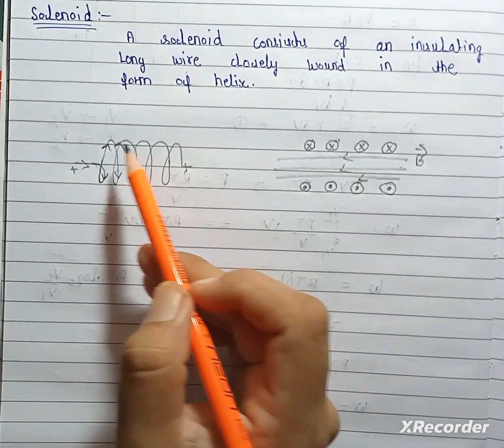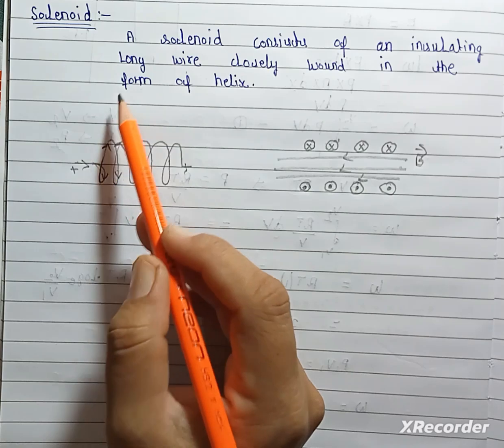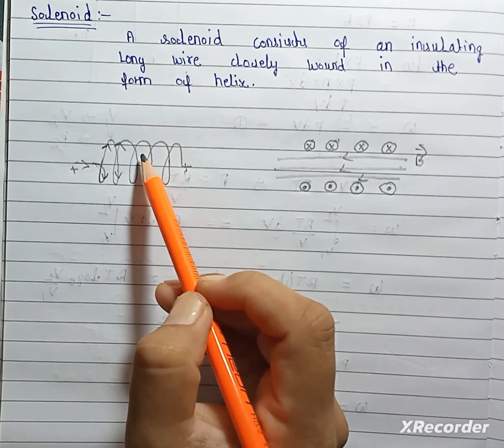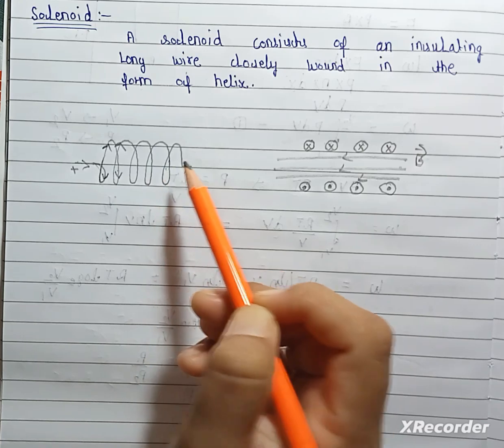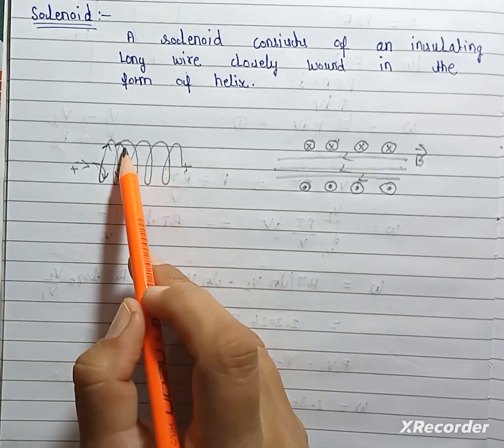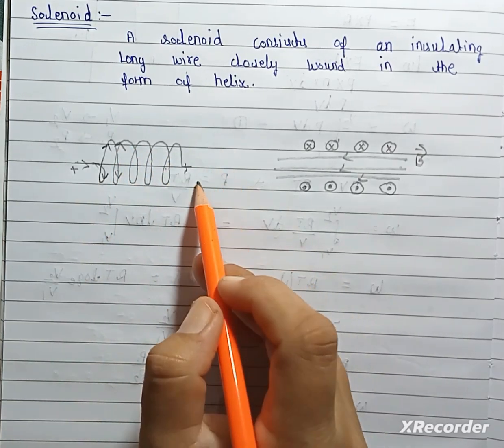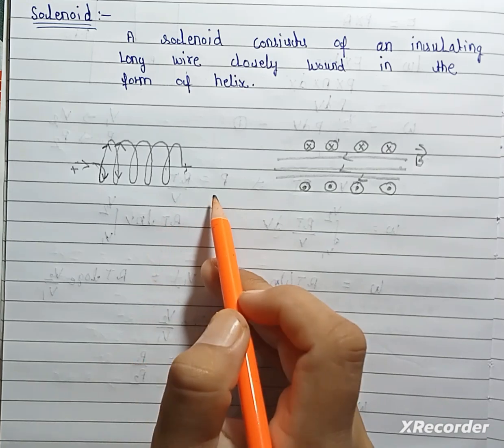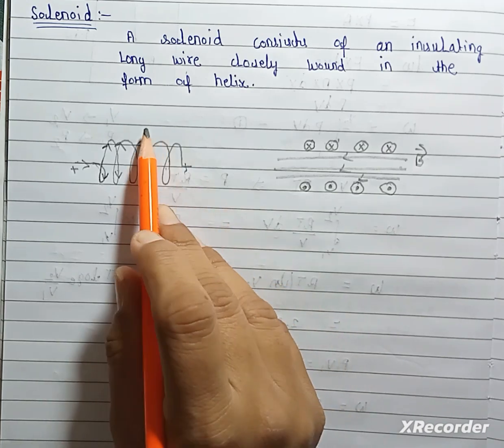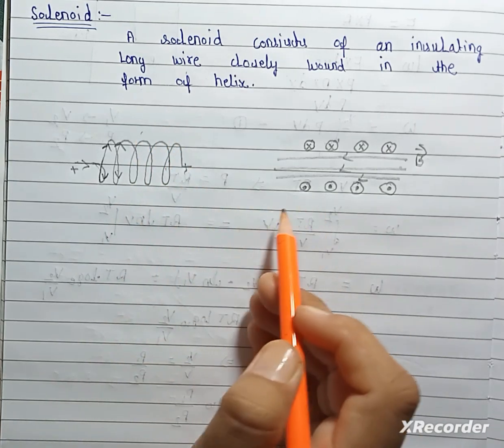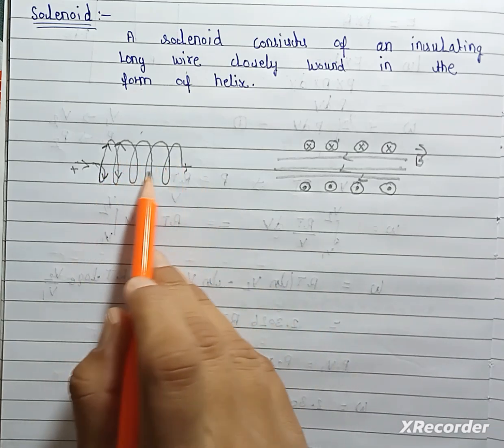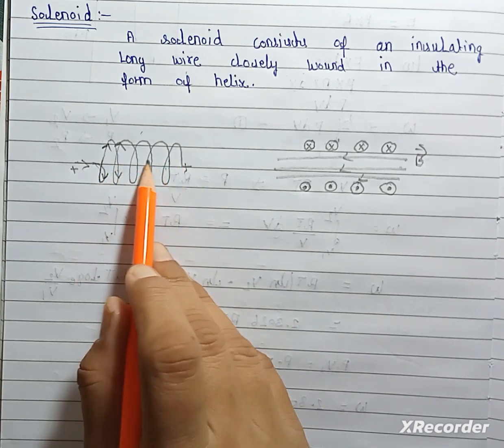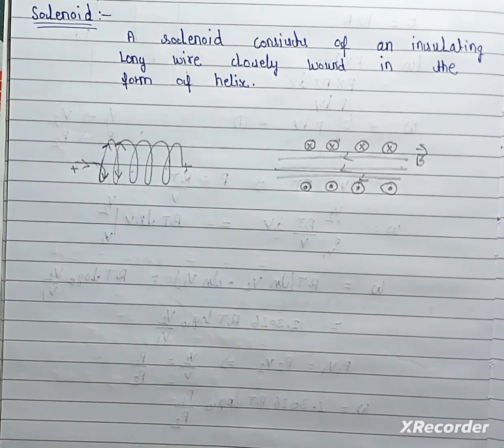When solenoid is tightly packed, then magnetic field due to this current will become zero for outside point near middle of solenoid. And, strong and uniform at a point near middle of solenoid.